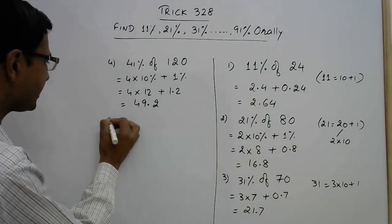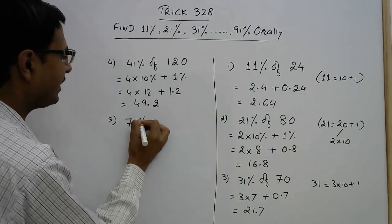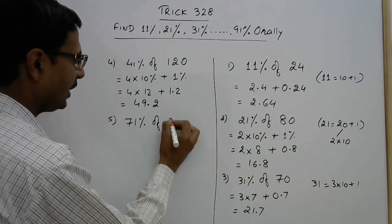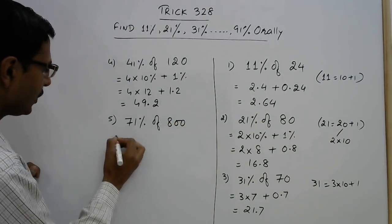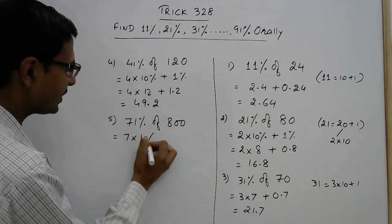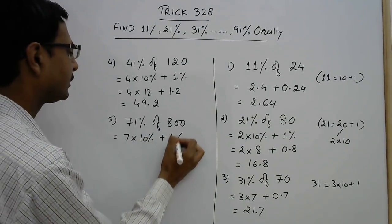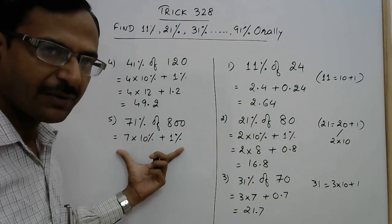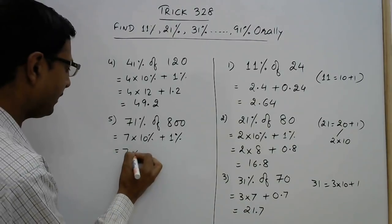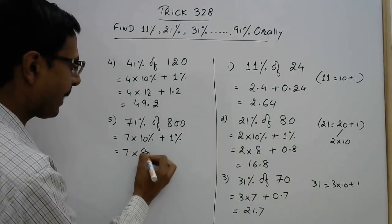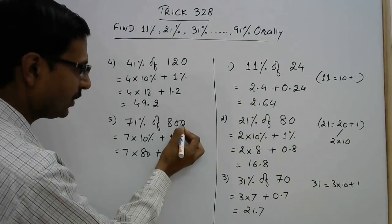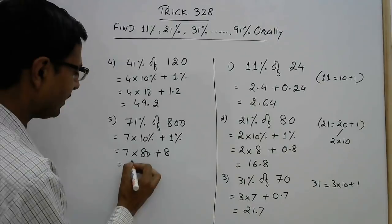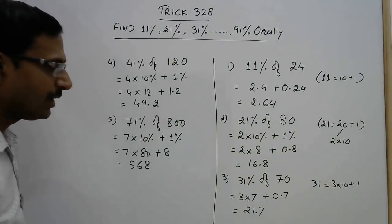Take more examples, this time take a larger percentage, we have 71 percent of another larger number, say 800. Now see, 71 percent is 7 into 10 percent plus 1 percent. You do not need to write these steps, just this is for the convenience of the viewers only. So 7 into 10 percent is 80, 1 digit from the right side, plus 1 percent, 2 digits from the right side is 8. So 7 into 56, 560 plus 8, 568 is the required percentage.